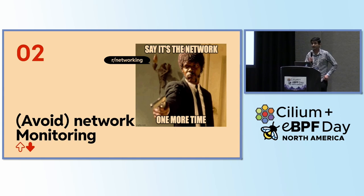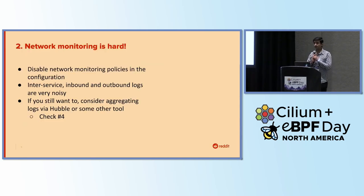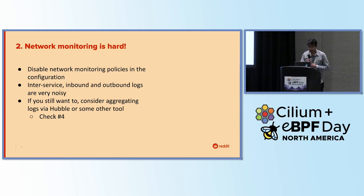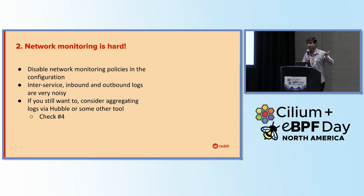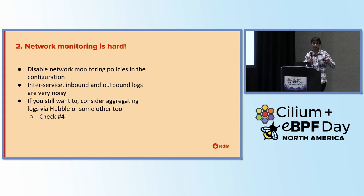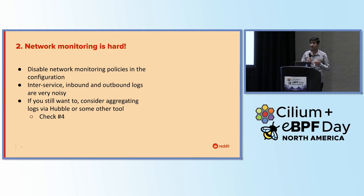The next gotcha is network monitoring. We all want visibility into what service calls are being made — inbound, outbound, all network calls. But network monitoring is hard if you don't already know what you're looking for, and there's just so much network log data that it's not possible to make sense out of it. Network monitoring is a great idea when you're further into your Tetragon journey, but for the initial phase, you can probably skip network monitoring policies. If you still want to monitor all your network, consider using a tool like Hubble or something that can do aggregation of those logs for you.